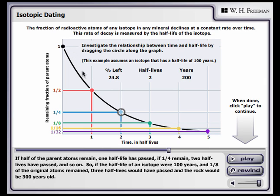This curve describes the shape of a curve for exponential decay. Note that in order to determine the age of the mineral or rock in years, you need to multiply the number of half-lives that have passed by the years per half-life for a given isotope.